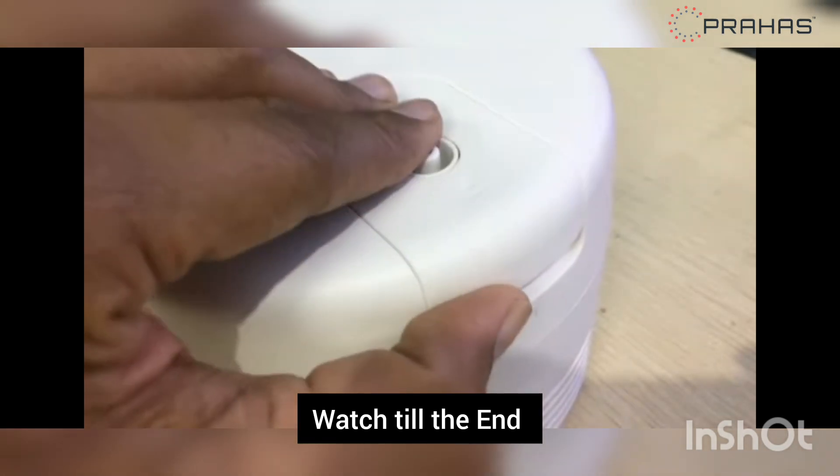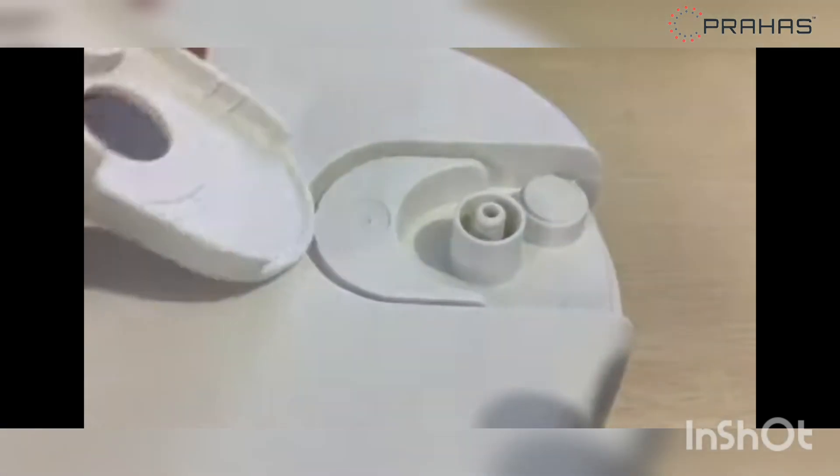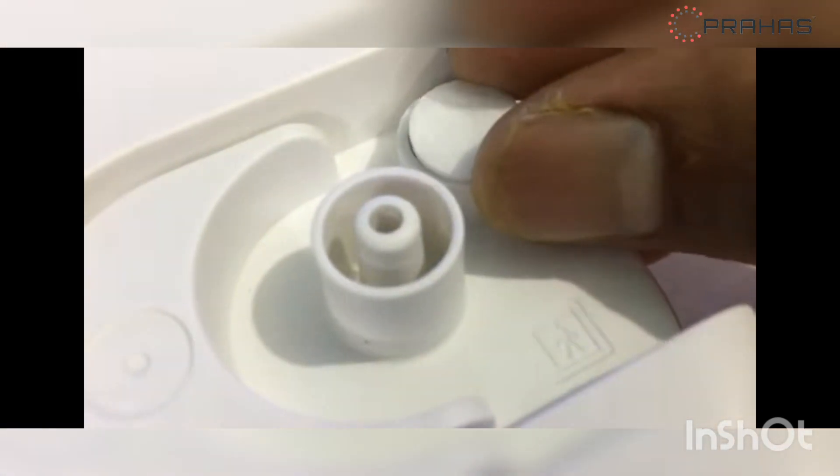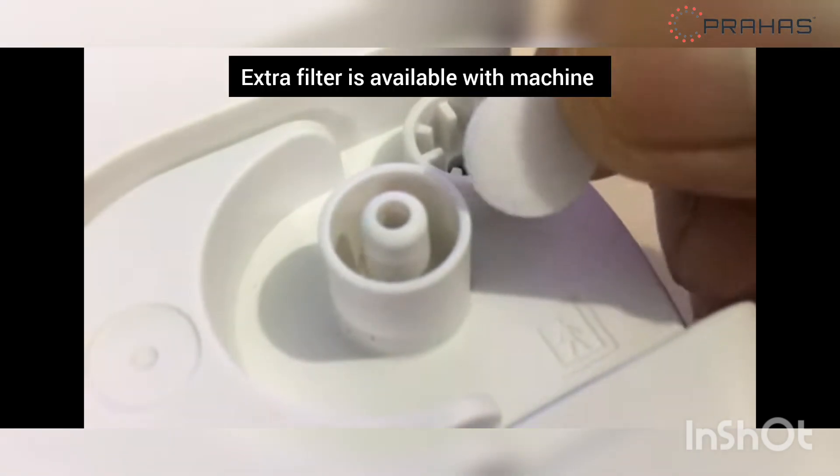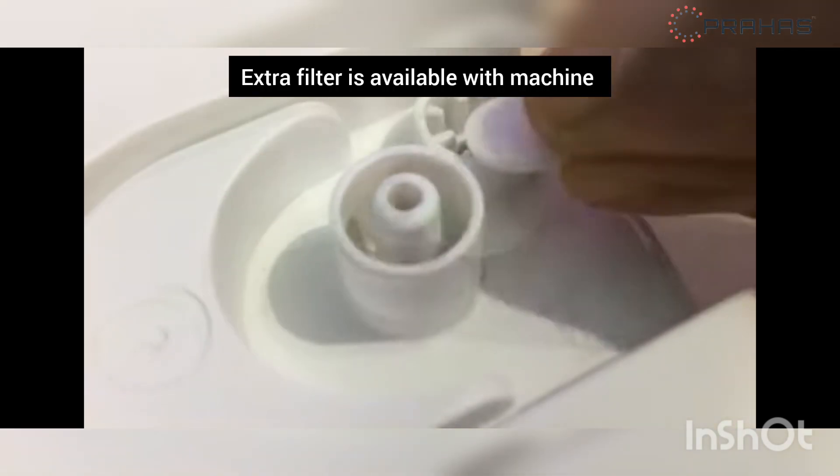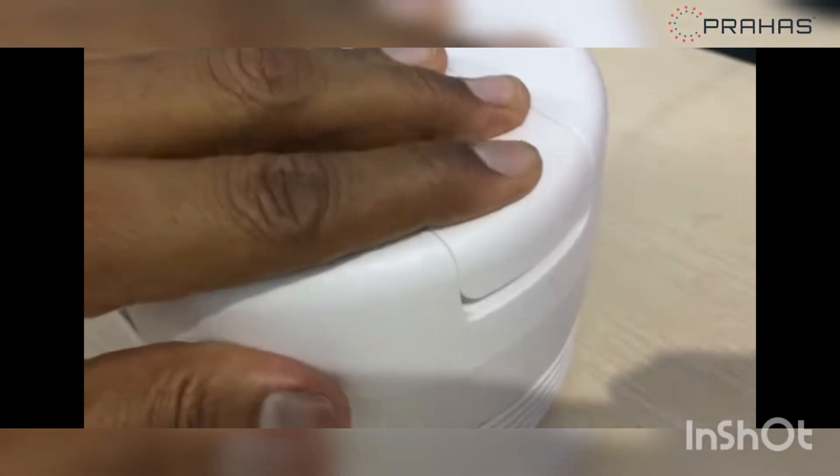To check the filter remove cover by pulling it up. Remove filter and check if it's free of dust and not wet. Remember filter cannot be cleaned and good to replace if used for more than 60 days.